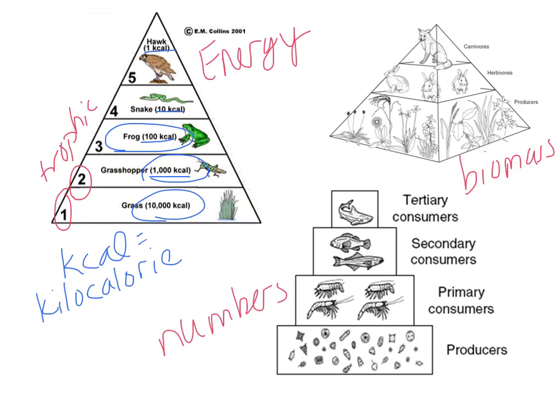There are three basic kinds of ecological pyramids. An energy pyramid shows the relative amounts of energy available at each trophic level, measured in kilocalories. A biomass pyramid shows the relative amounts of mass of organisms at each trophic level. A numbers pyramid shows how many organisms are at each trophic level. As a general rule, we have more producers than secondary or tertiary consumers, mainly because they need to produce the energy to sustain the entire food chain.